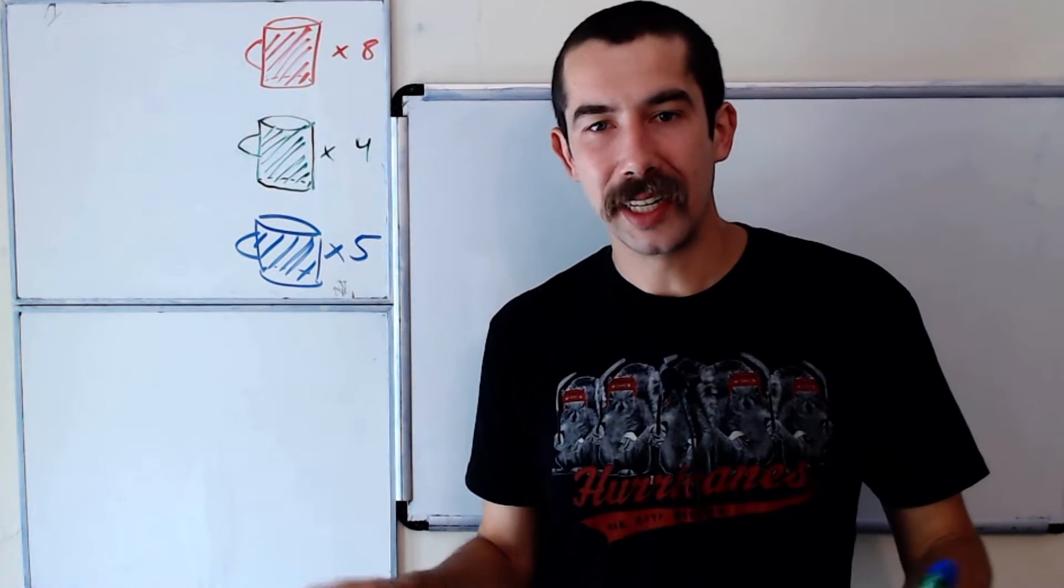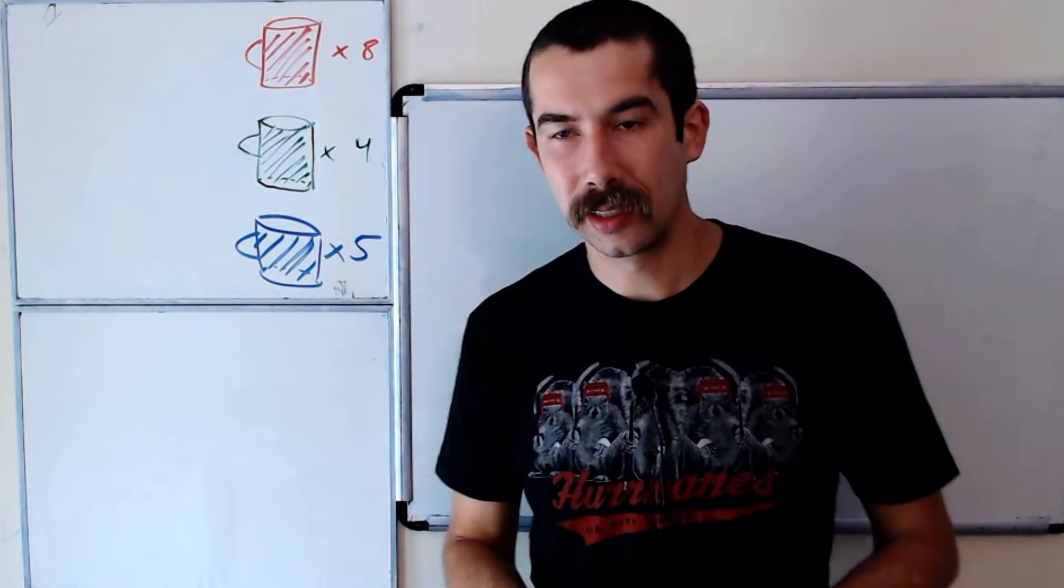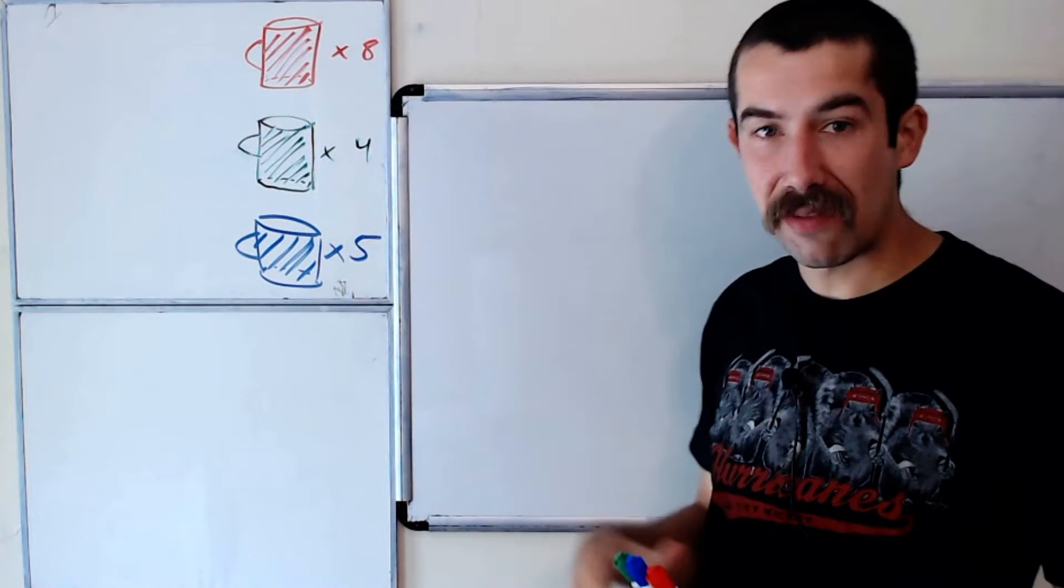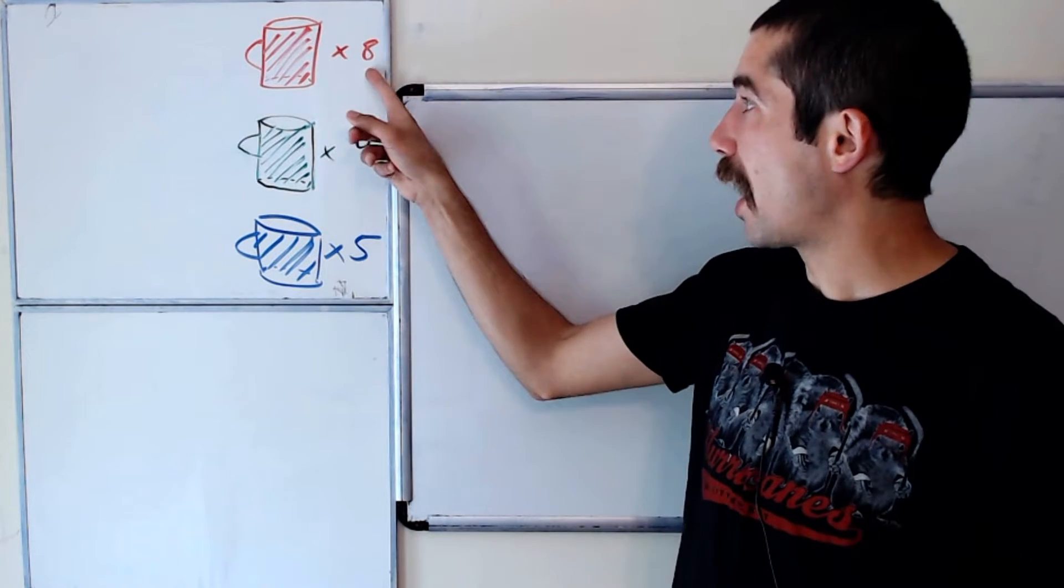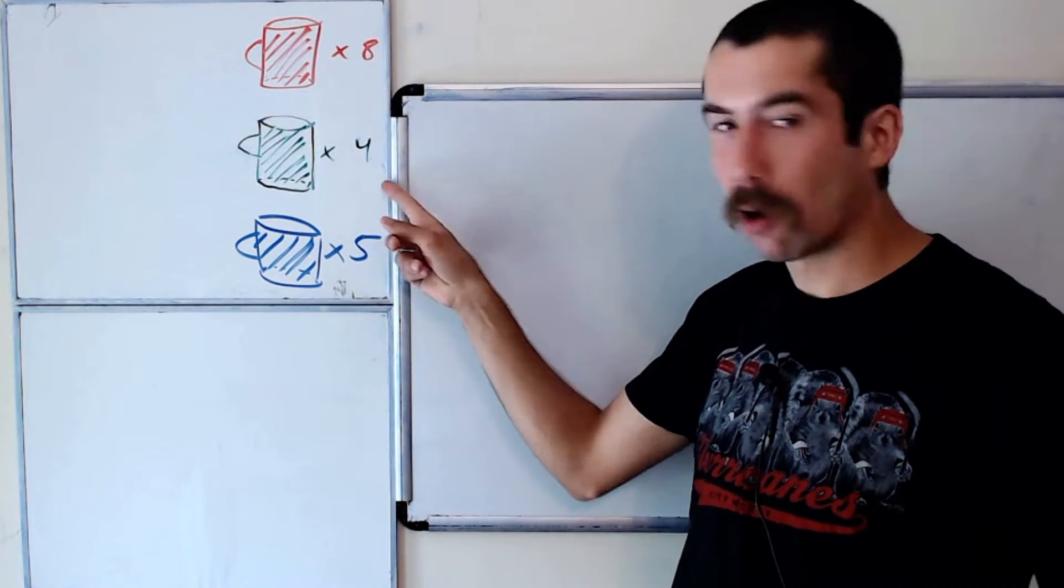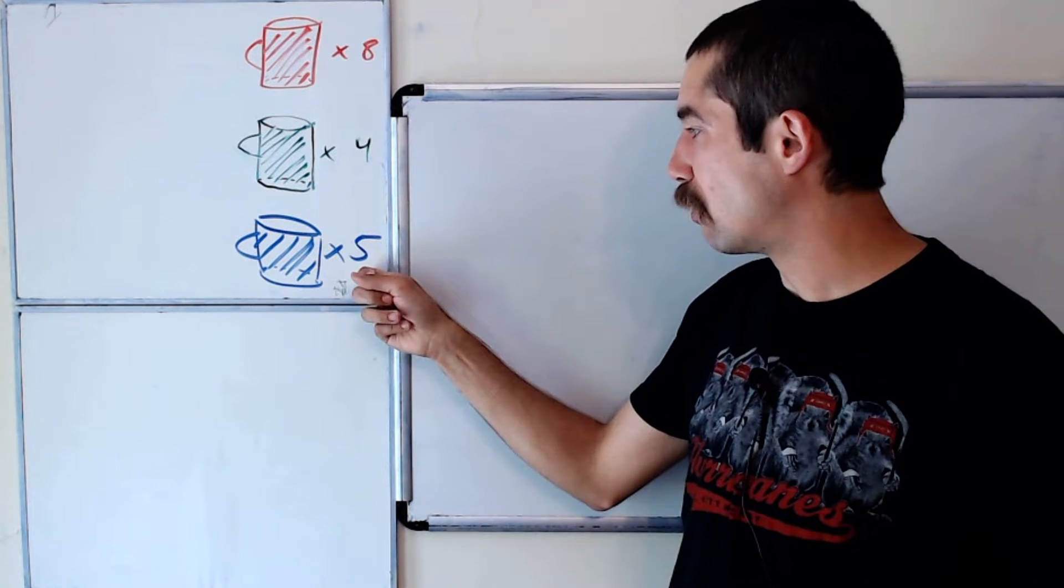I got a Combinatorics question for you today and I think you're really going to enjoy it. Suppose you have 17 mugs: eight of them are red, four of them are green, and five of them are blue.